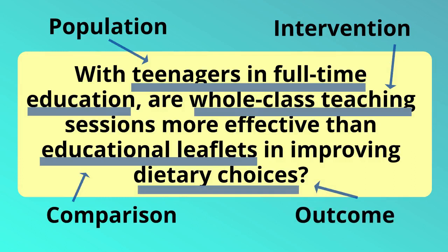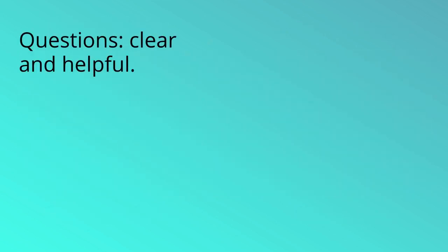Using PICO is one way to make sure that the question you ask in research is clear and helpful, without the possibility of being vague or unanswerable. It does this by prompting you to check that key elements of a question are included.